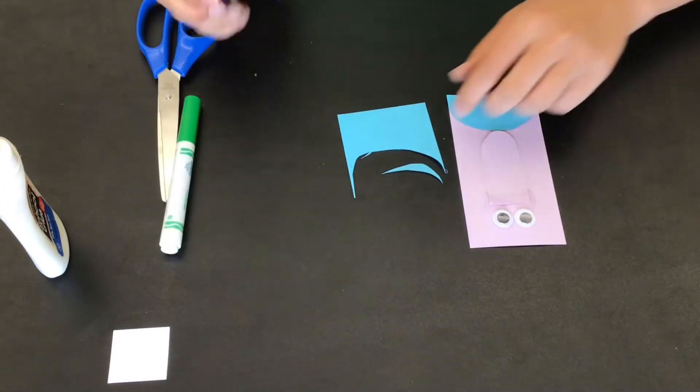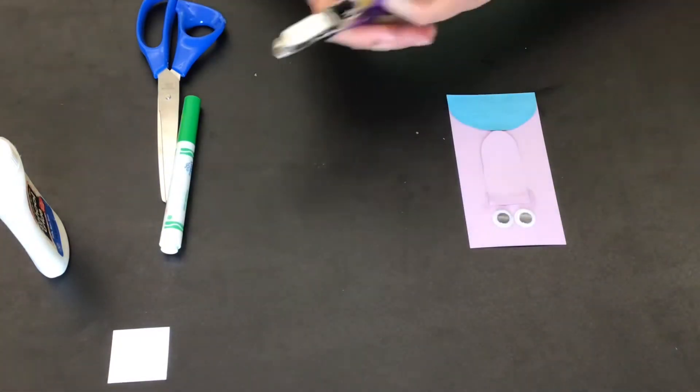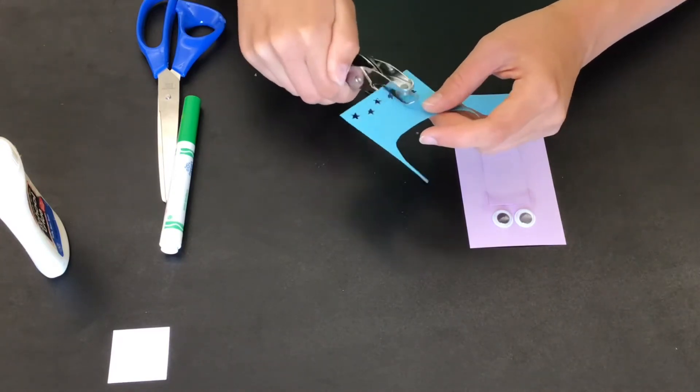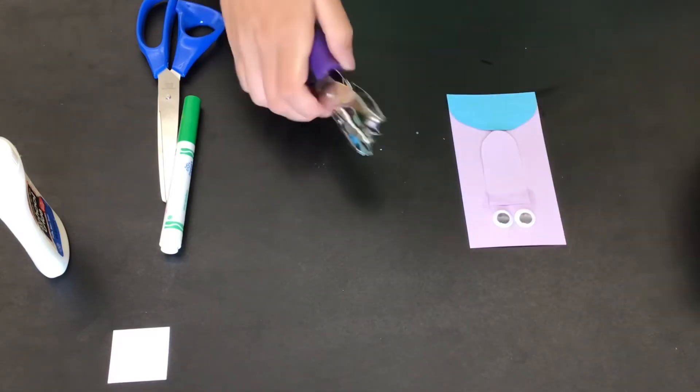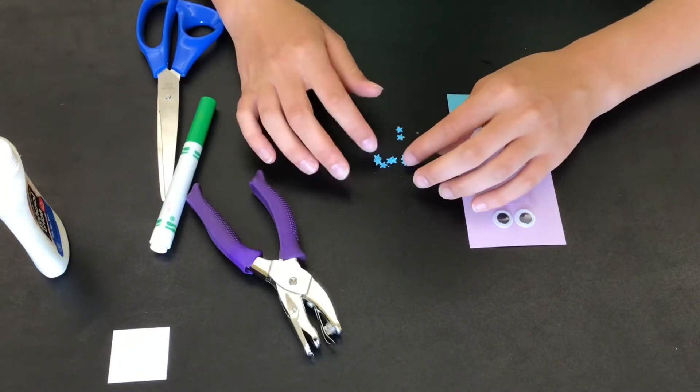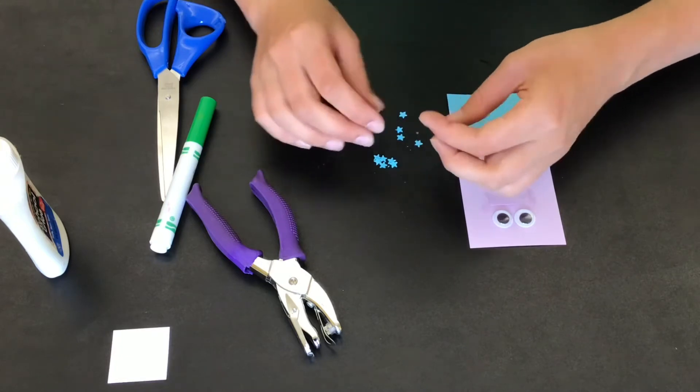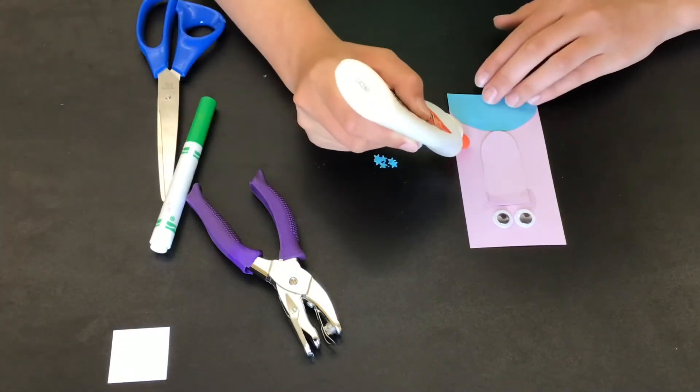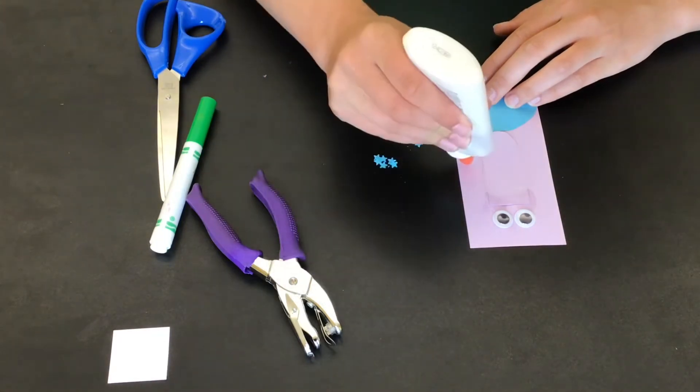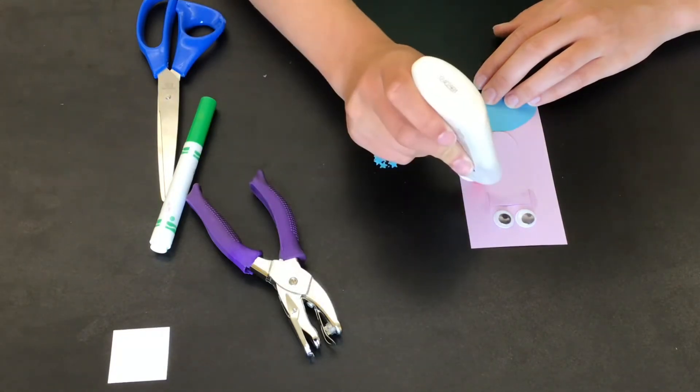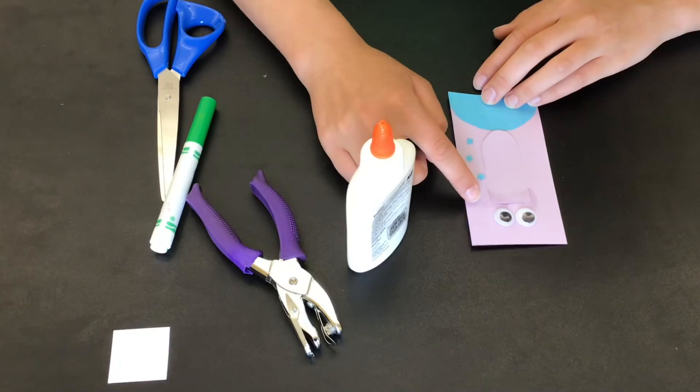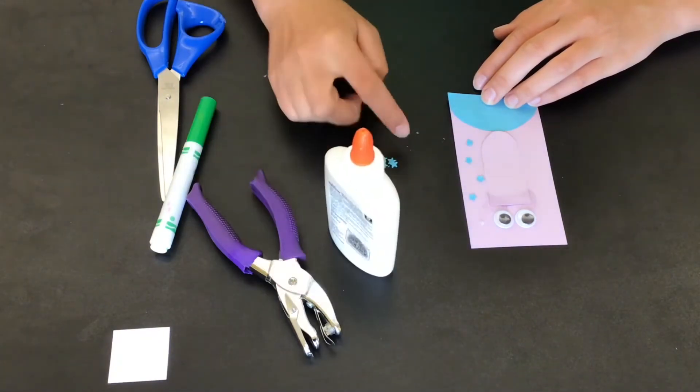Next, I am going to make some star polka dots on my monster. I have this really great star hole puncher, and I'm going to take the blue piece of paper and turn it into a bunch of stars, a bunch of polka dots to put on my monster. You can turn this into anything you want. It doesn't even have to be a monster bookmark, it could be like a princess or a dragon. If you have a hole puncher at home, you can make it into circle polka dots. You could cut your paper into triangles. You can do stripes. You can really turn this into anything you want. So I'm just going to glue my polka dots around my monster.